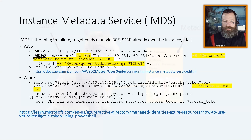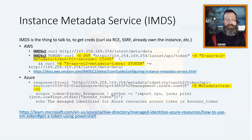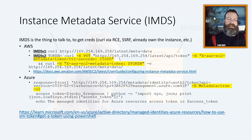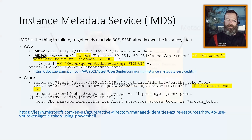If you look at the Azure IMDS, it almost seems like this is considered in the design, because there is that atypical header that must be included — the metadata true header — in order to get an Azure token. So just things to bear in mind as you're testing apps and trying to get access keys, whether it be through RCE or SSRF.